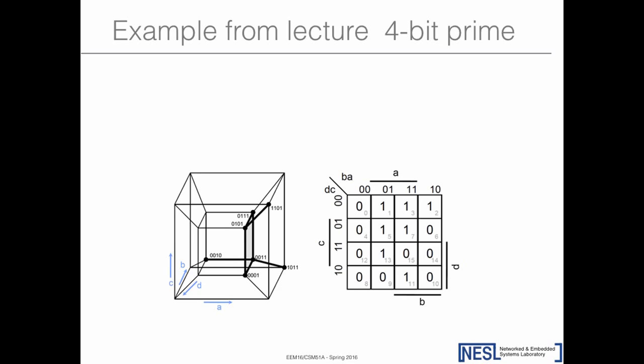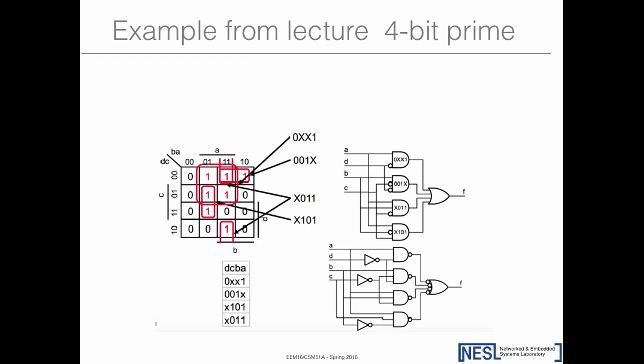Here's an example from lecture: a 4-bit prime detector. The primes in 4-bit numbers are 1, 3, 5, 7, 11, and 13. In the lecture you created a Karnaugh map and derived a sum-of-products expression, explicitly putting the ANDs, ORs, and inverters. Now you'll see the beauty of HDL—you don't have to explicitly describe how it's designed. You say what you want and leave the implementation to the tool.